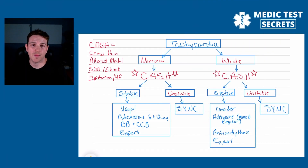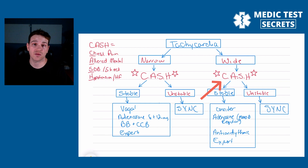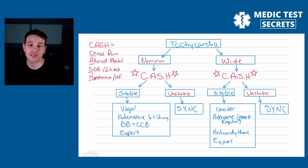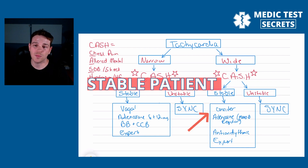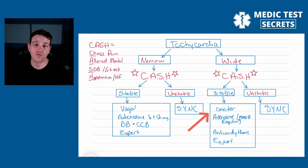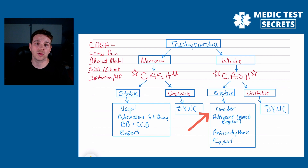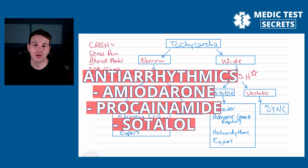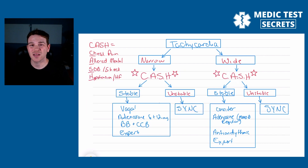If you put the patient on the monitor and you see that the rhythm is wide, we use the same CASH criteria. CASH can be used for any of the ACLS algorithms — bradycardic or tachycardic. We identify whether the patient has chest pain, altered mental status, shortness of breath, signs of shock, hypotension, or signs of heart failure. If the patient does not meet that criteria, the patient is stable — we'll consider adenosine for a monomorphic and regular rhythm, and if that's unsuccessful, we'll administer an anti-arrhythmic and then consider expert consultation. If the patient is unstable, we will synchronize cardiovert.